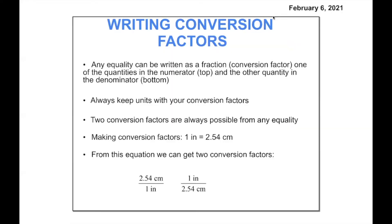Anytime you have an equality, it can be written as a fraction or a conversion factor. One of the quantities will be in the numerator on the top, and the other quantity will be in the denominator or on the bottom. And if those two things are equal, it can go either way — you can put the big number on top or the big number on the bottom. As long as the two numbers are equal, you can put them into that fraction, and you have to keep units with your factors.